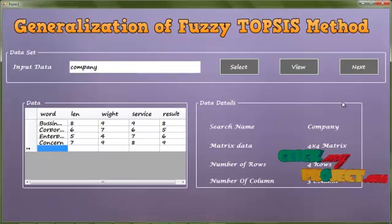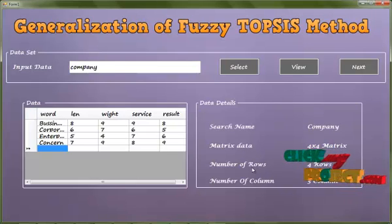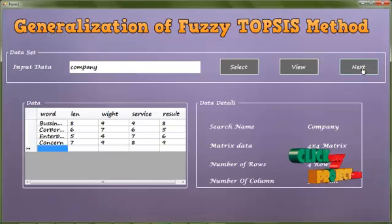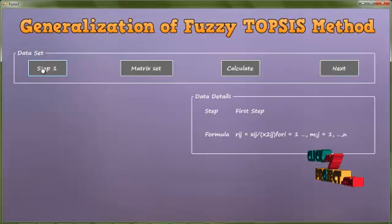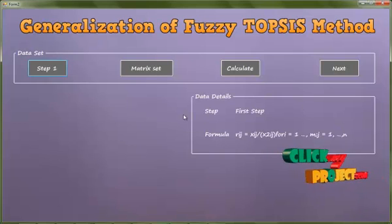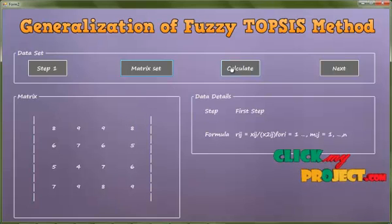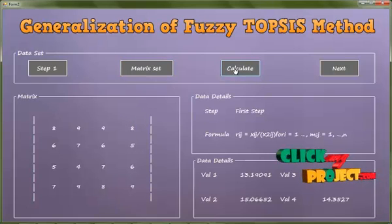Searching by company name: the matrix data equals 4 classes. The matrix has 4 rows and 5 columns. Then click next process. Then click Step 1 — Formula 2 is applied for our process. Matrix set: this is our data set for the matrix. Then click to calculate. This shows value 1, value 2, value 3, and value 4 — adding these values for calculating our details. Then click next process.